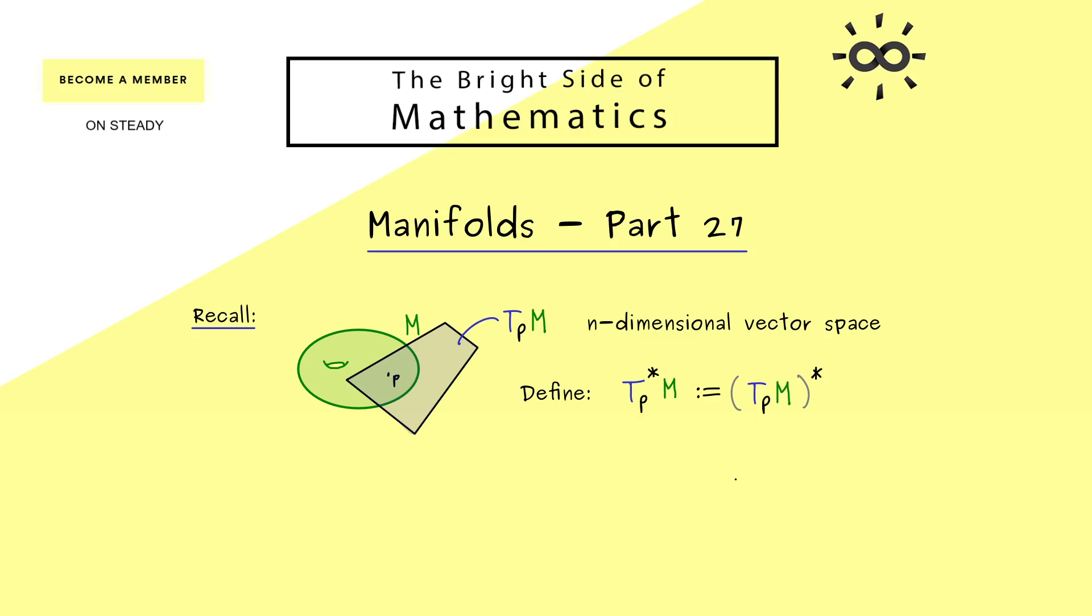In case you have never heard of the dual space at all, I give you the definition here. It's given by the set of all linear maps alpha, defined on the vector space T_p M, mapping into the corresponding field R. In short, the dual space is given by the set of linear functionals. Functional here just means that the codomain of the linear map is just given by the vector space R.